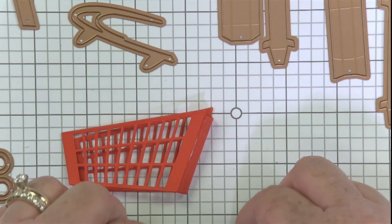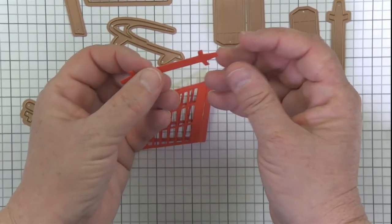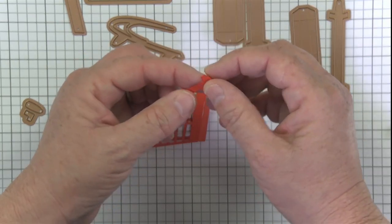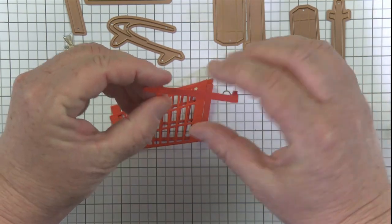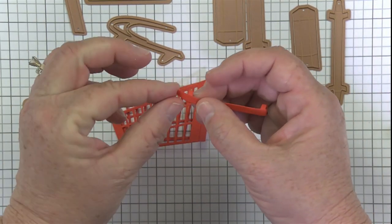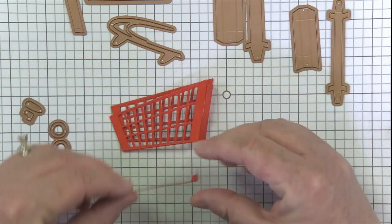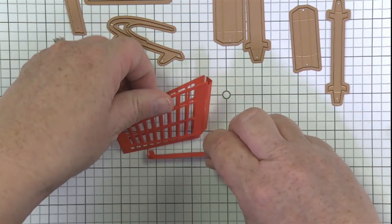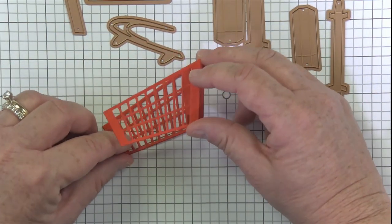This guy, once these are all dry, your bottom part simply has these little tabs which also have little score lines, so super easy. This becomes the bottom of your cart and those tabs are there just to help you adhere it to the inside of your cart. This little guy just drops right in here. It's a little fiddly but not bad.